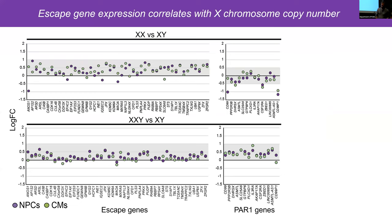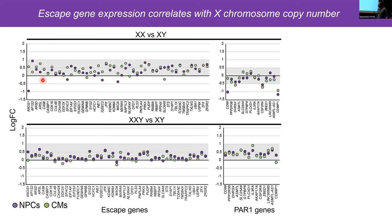Since we are focusing on sex chromosome aneuploidy, we started by looking at expression from the X and Y chromosomes, focusing on genes that escape X inactivation. When we compared XX cells to XY cells, most escape genes were biased toward two X chromosomes — purple dots are NPCs and green are cardiomyocytes. PAR genes were mostly male-biased due to the spread of X inactivation. I want to draw attention to the ANOS1 gene, which is heavily male-biased compared to other escape genes, but only in NPCs. ANOS1 is involved in nerve cell migration and axon outgrowth, and is causative in Kallmann syndrome — a male-biased disease affecting the sense of smell and hormone production, about four to five times more prevalent in males.